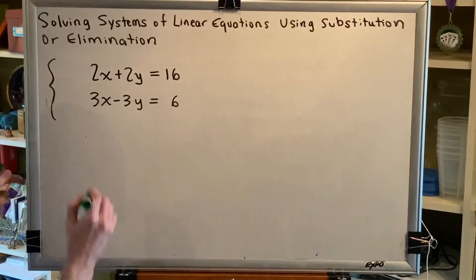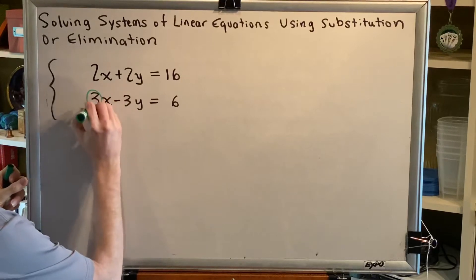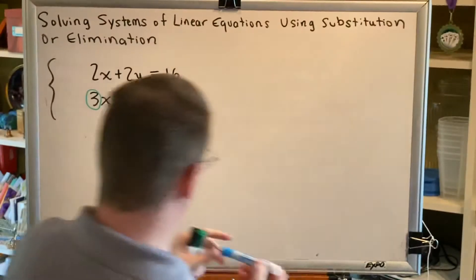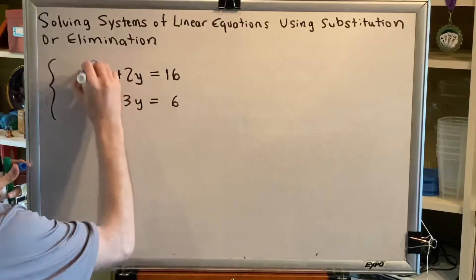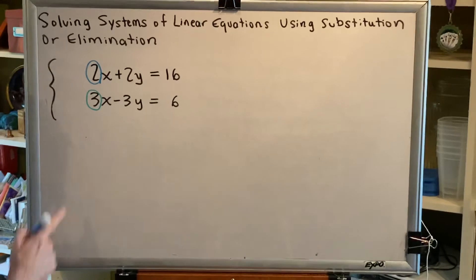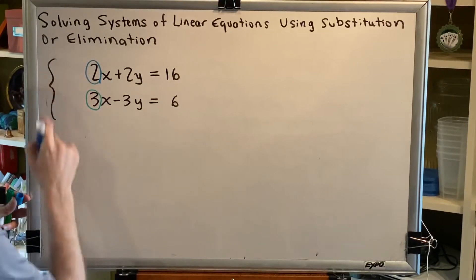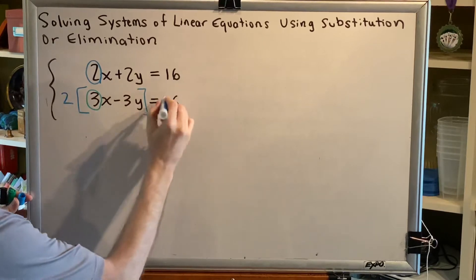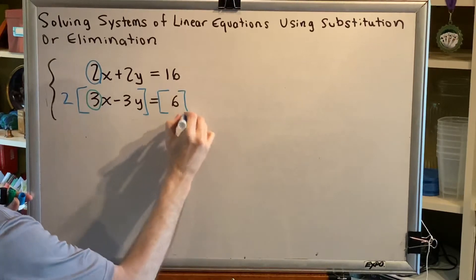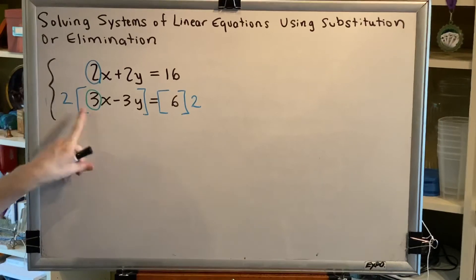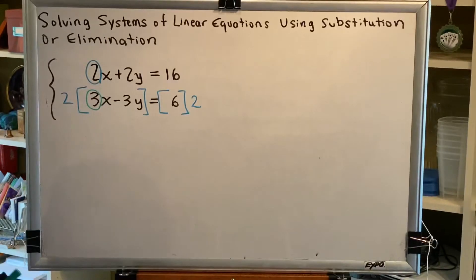Well, one approach is to look at the coefficient of the x on the bottom and to also look at the coefficient of the x on the top and to use those numbers in a very smart way. For example, the coefficient of the top x is 2, and if we use the number 2 to multiply both sides of the bottom equation, then when we distribute that 2, we're going to get 2 times 3x equals 6x.